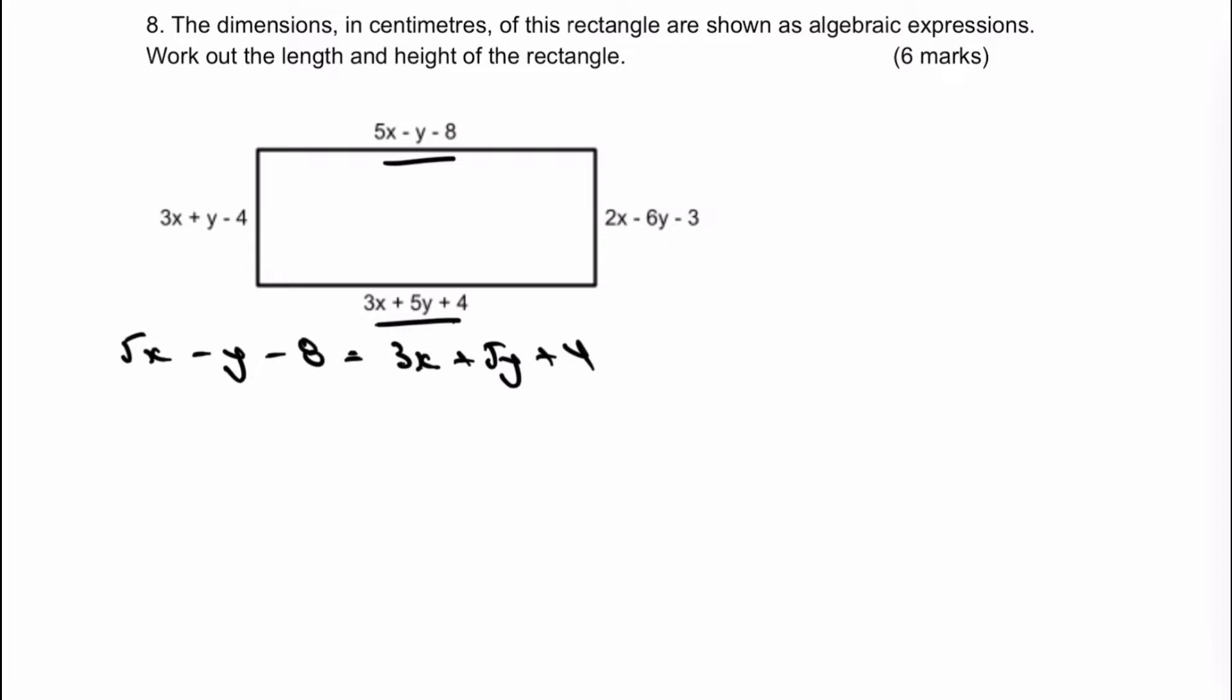So if I take 3x away from both sides, I get 2x. And then if I minus 5y from both sides, I get minus 6y. And that equals, add 8 to both sides, that equals 12. Now all of those coefficients are divisible by 2. So therefore, I can write this as x minus 3y equals 6. And that just makes my life a little bit easier.